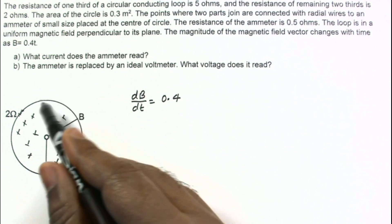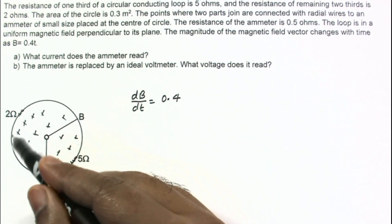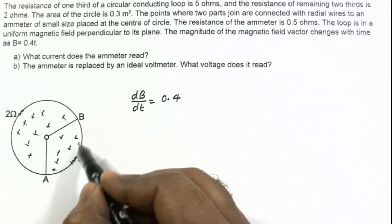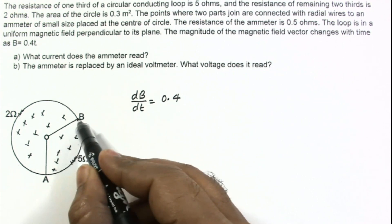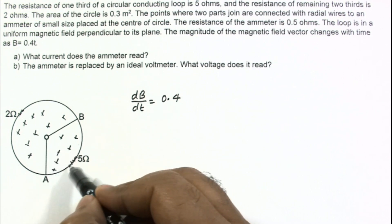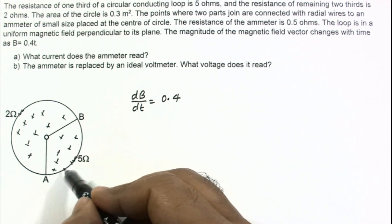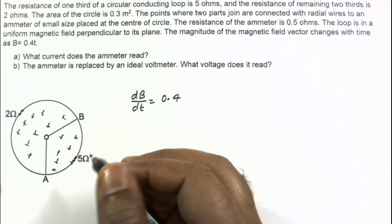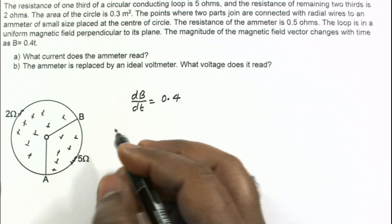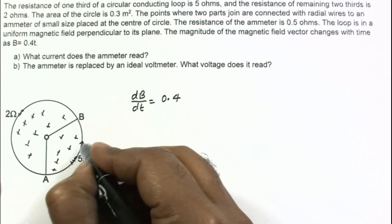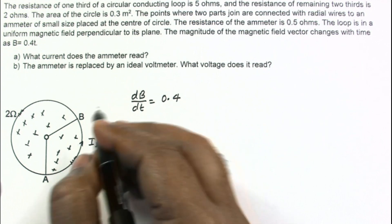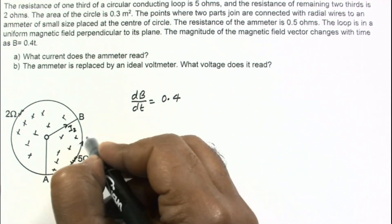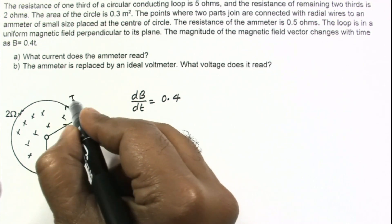An anti-clockwise EMF is induced in the loop. Taking the loop from A to B and back through the ammeter, there will also be an anti-clockwise EMF induced. Assuming the current in the one-third section is i1 and the current through the ammeter branch is i2, by the junction rule the current in the two-thirds section is i1 plus i2.